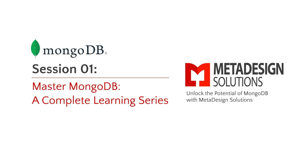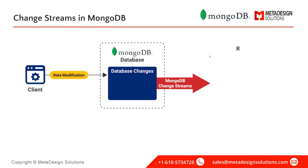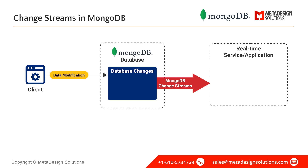Have you ever needed to track real-time changes in your database, whether it's monitoring data updates, triggering events, or syncing services? MongoDB provides a powerful solution: change streams. Change streams allow you to listen to data modifications in real-time, providing a continuous feed of changes including inserts, updates, deletes, and replacements, without requiring periodic polling. This feature is built on MongoDB's replication mechanism, ensuring that you receive changes as soon as they occur.